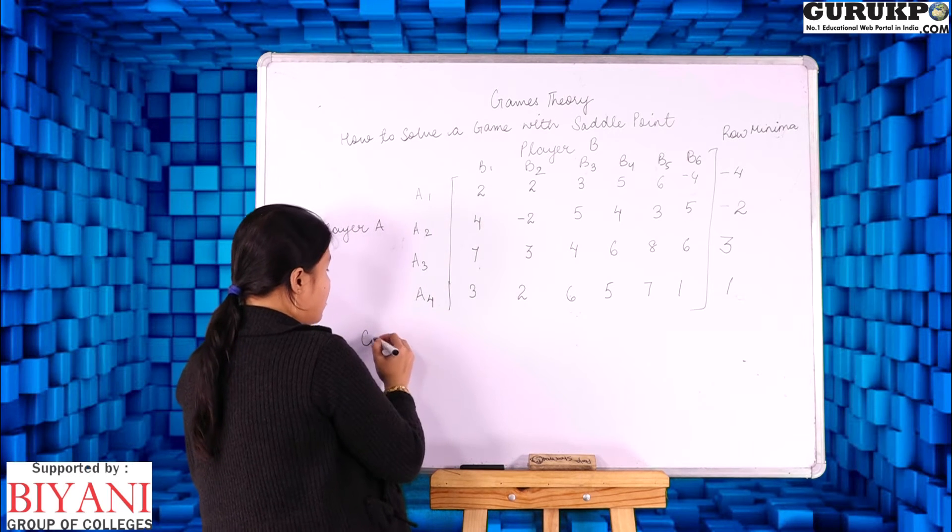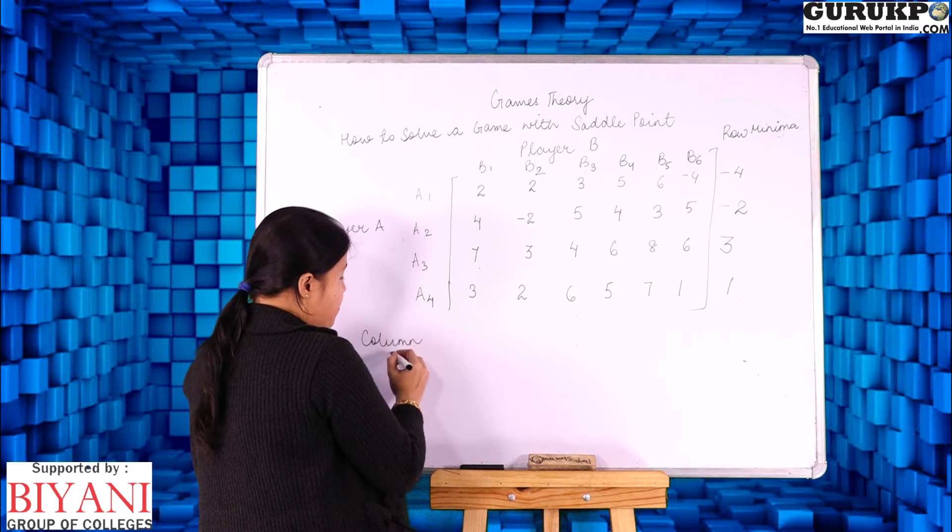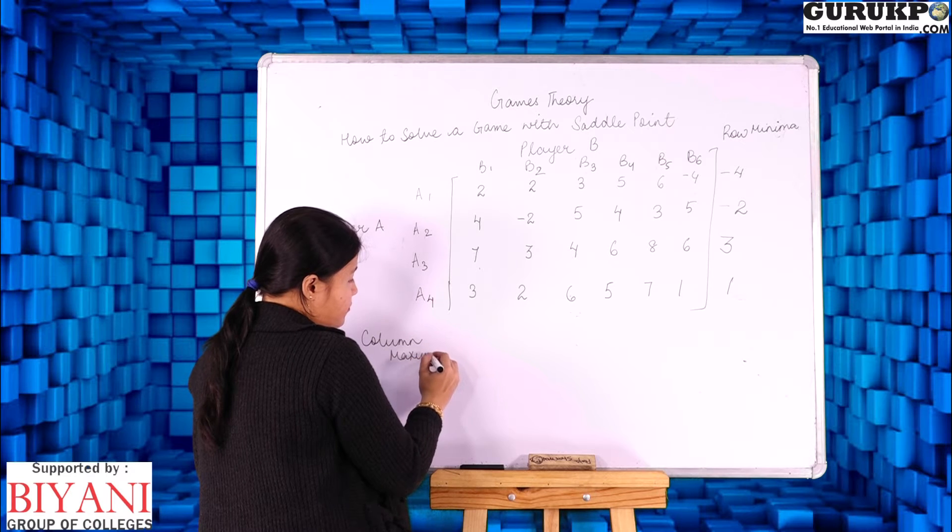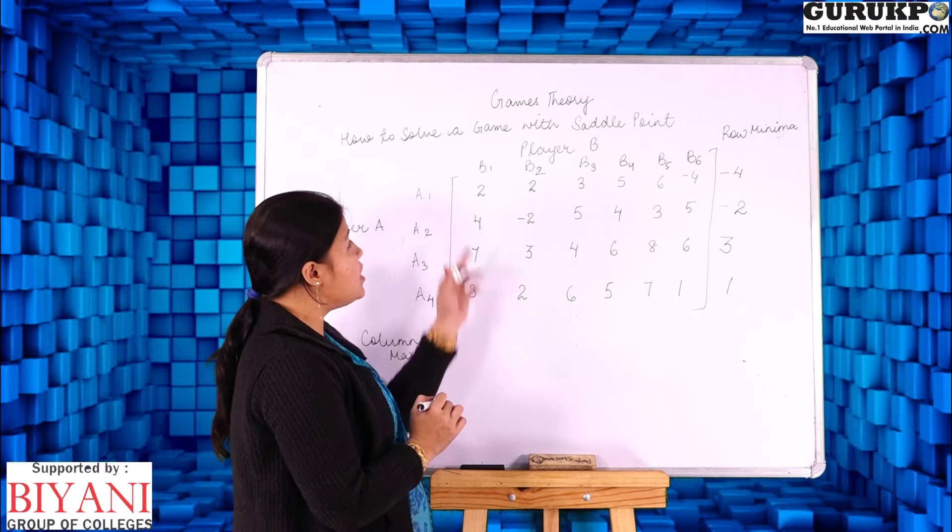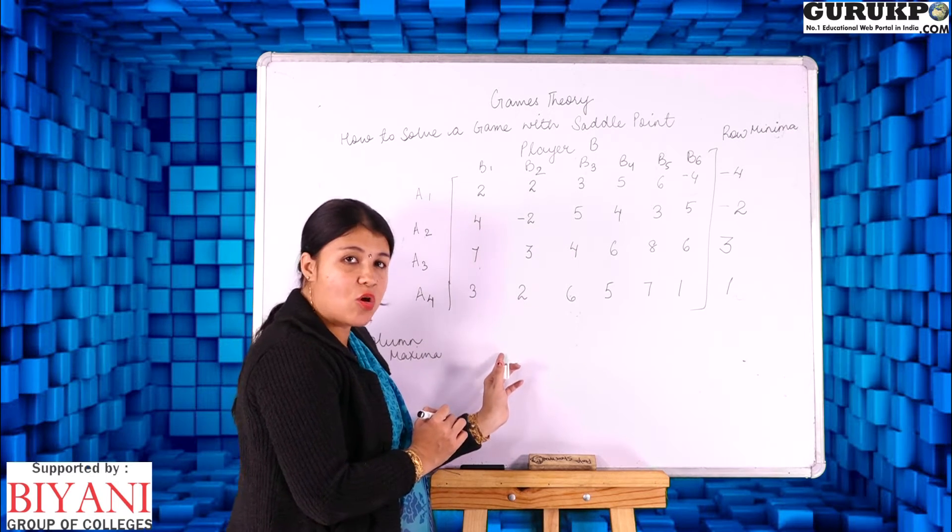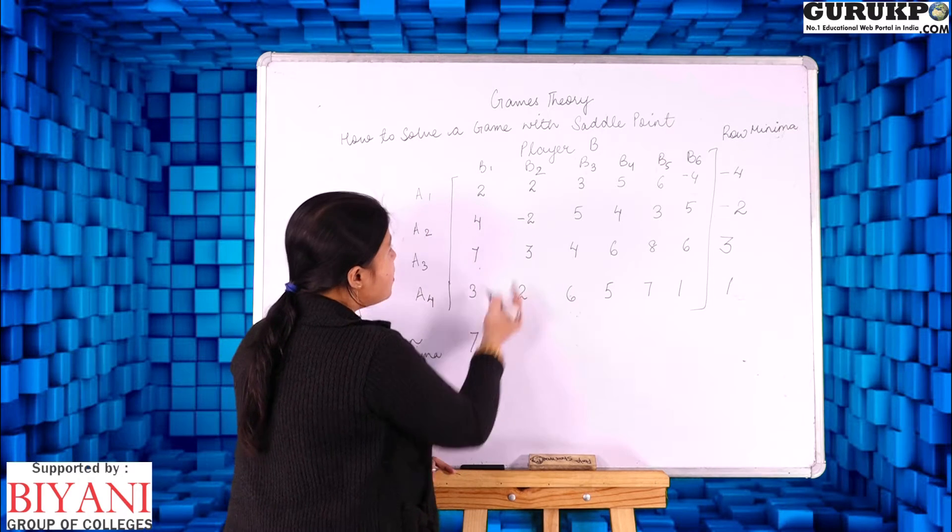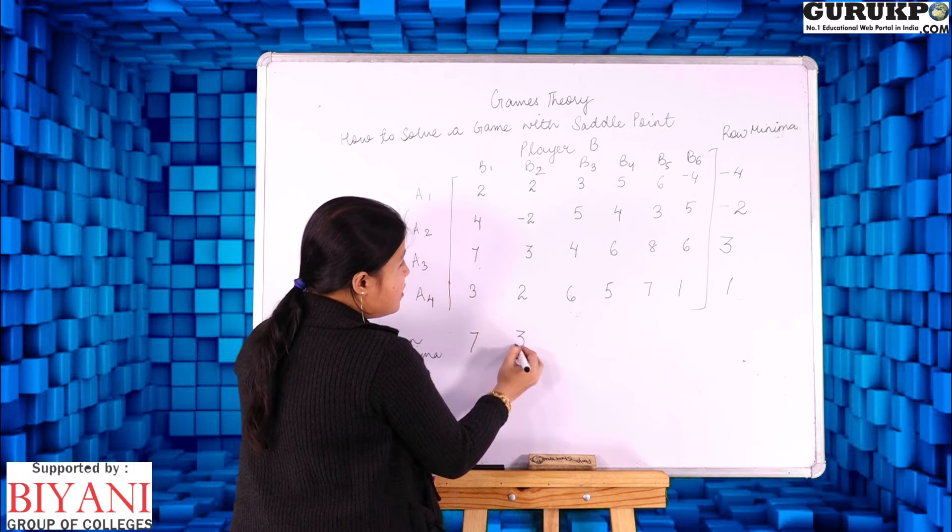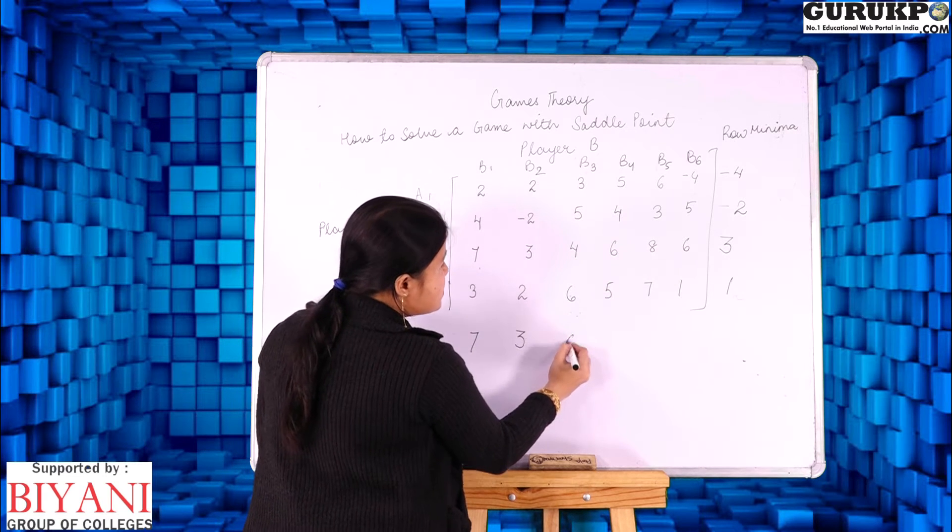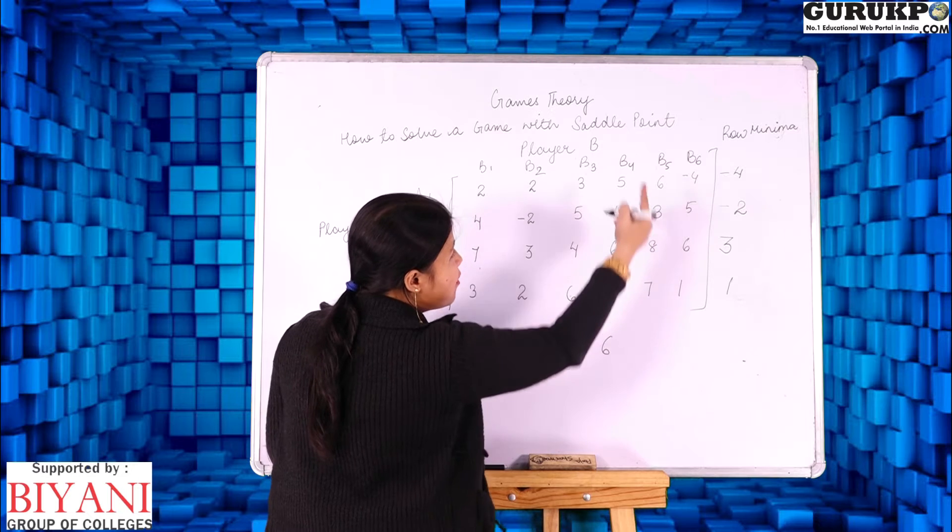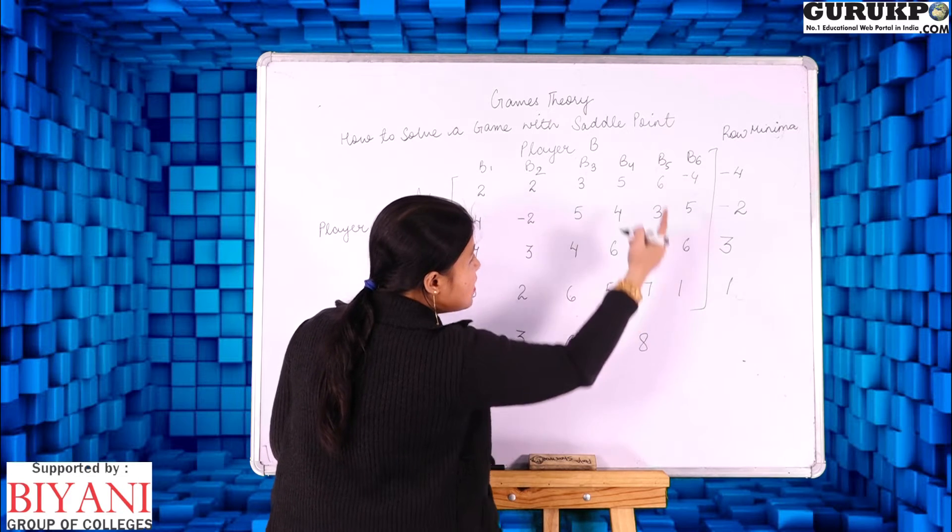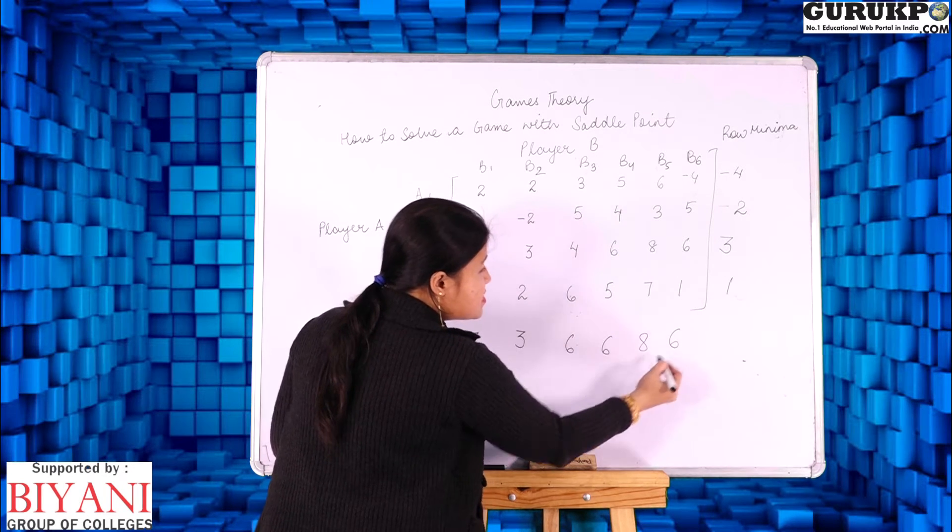Now accordingly we will calculate column maxima. That means we have to indicate the maximum entry from each column. So from B1 the maximum entry is 7. From B2 it's 3. From B3 it's 6. From B4 it's 6. From B5 it's 8 and from B6 it's again 6.